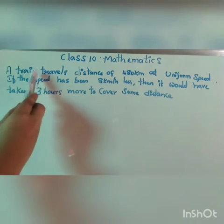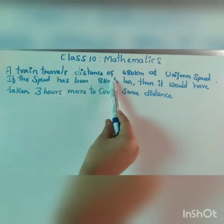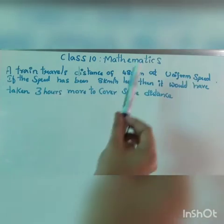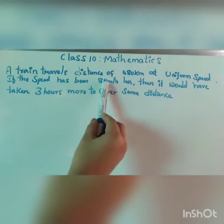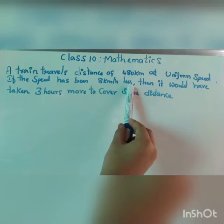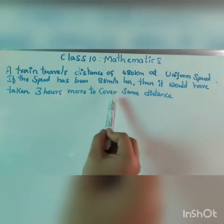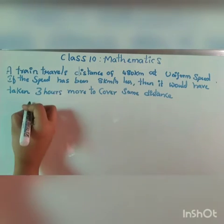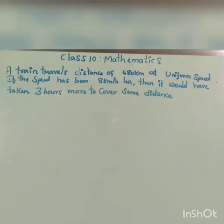The question given is: a train travels a distance of 480 km at a uniform speed. If the speed had been 8 km per hour less, then it would have taken 3 hours more to cover the same distance. You have to find out the speed.